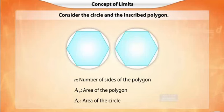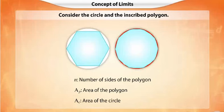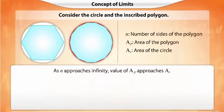Upon increasing the number of sides of the polygon to 8, we can see that the difference between the area of the polygon and the area of the circle has decreased. As we keep increasing the number of sides of the inscribed polygon, we can see that the area of the polygon gets closer and closer to the area of the circle. As N approaches infinity, the area of the polygon AP approaches the area of the circle AC.